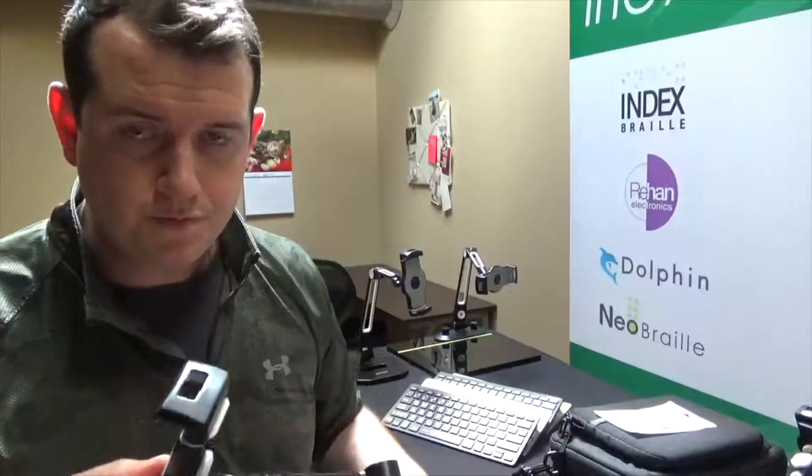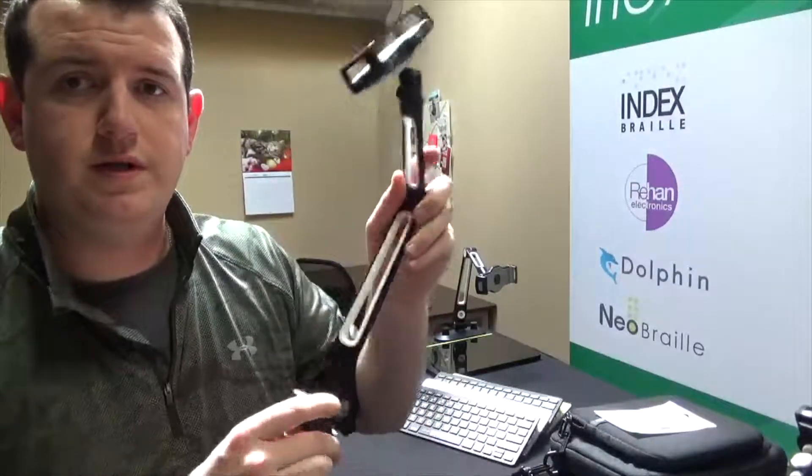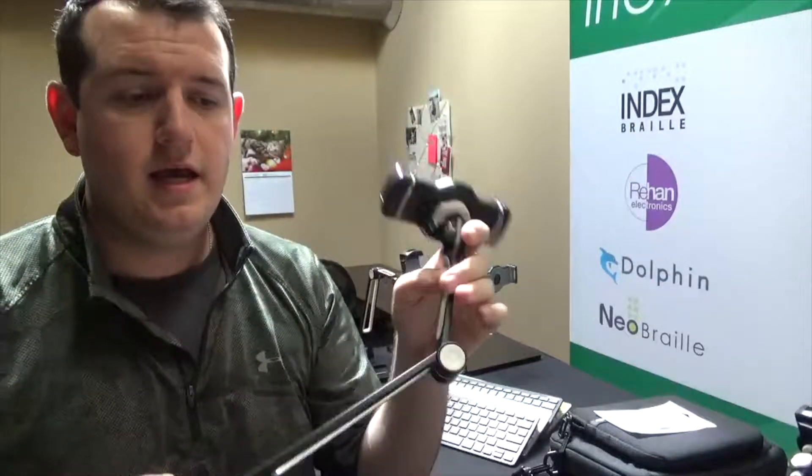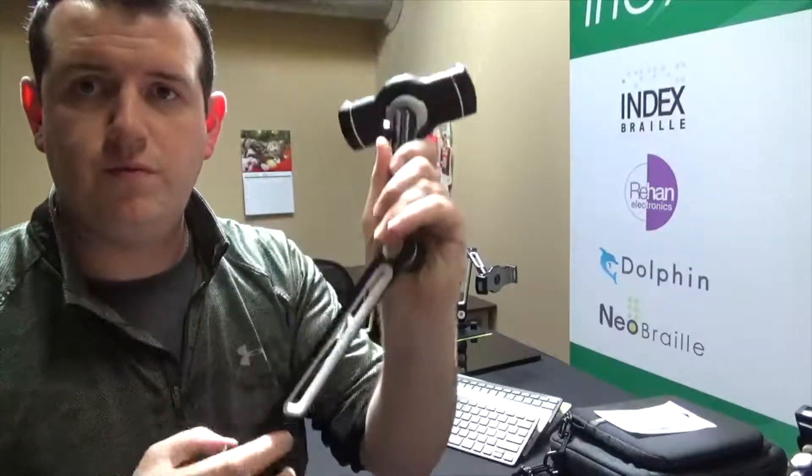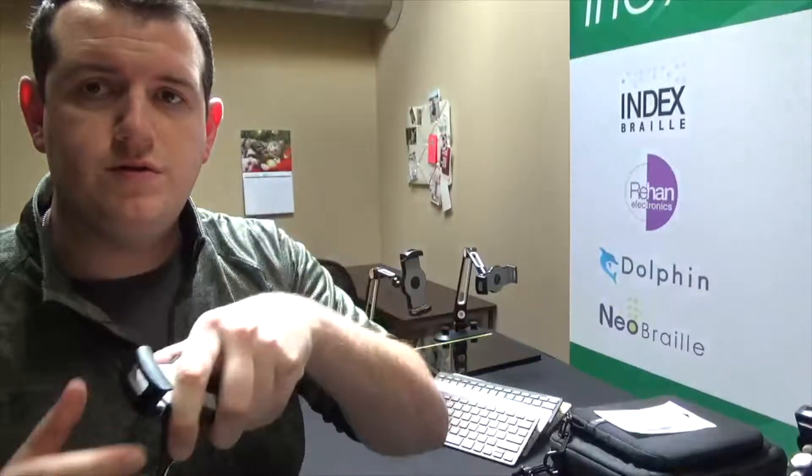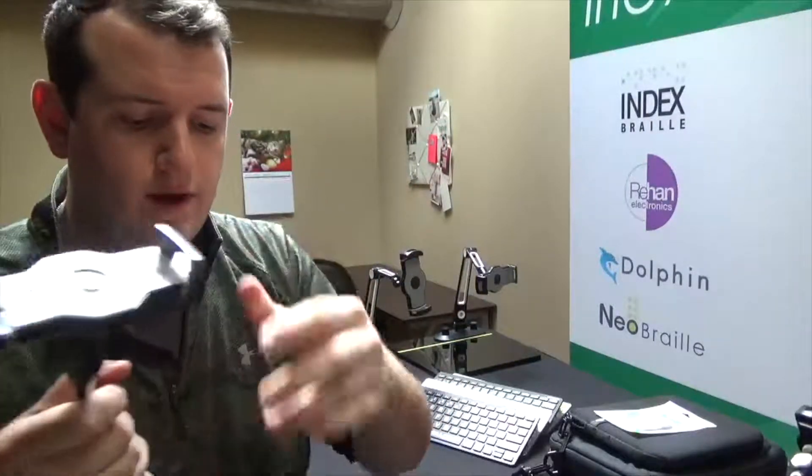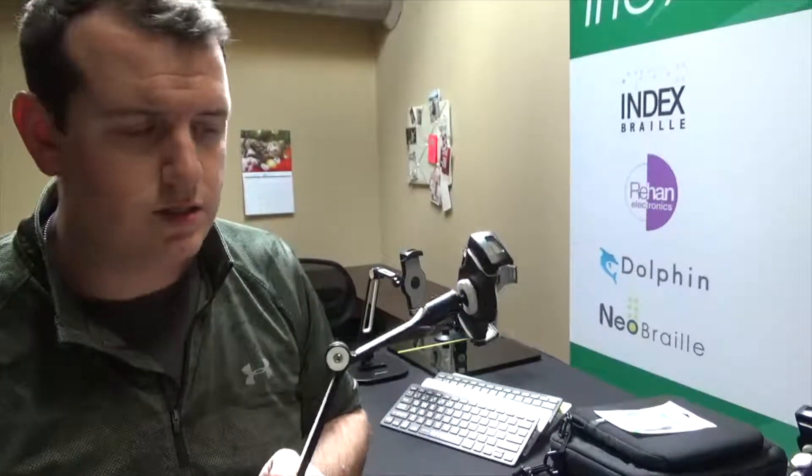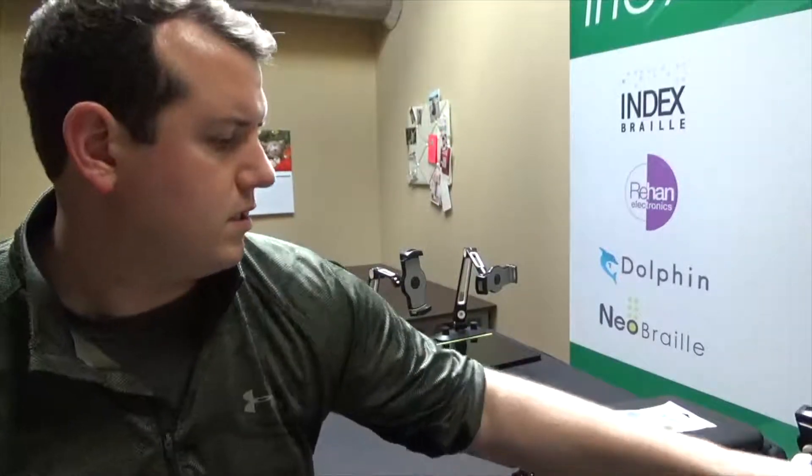Setting that aside, we have a few different arm options as well. This one is a clamp style arm. This one would actually clamp to like your desk or something like that. And then you can use this arm that's adjustable. You can move your tablet around. You just clip your tablet in this guy right here. So there's a clamp option. This is really nice because it's super stable. Clamps real nice and tight to your desk or table. So that's a good option.